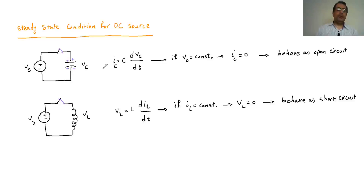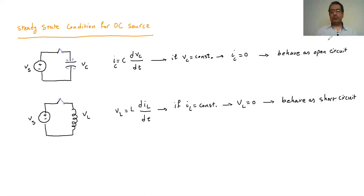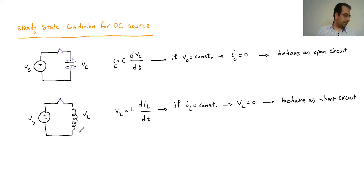So in summary: if I have the steady-state condition — DC sources in my system, everything is steady-state, nothing is changing — I can replace the capacitor with an open circuit, basically just remove it. And I can remove the inductor and replace it with just a wire. That's how it works for steady-state analysis.